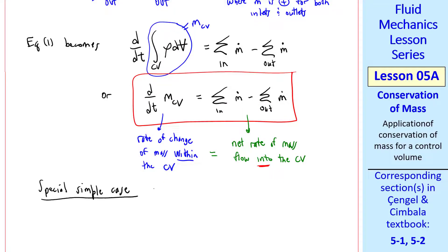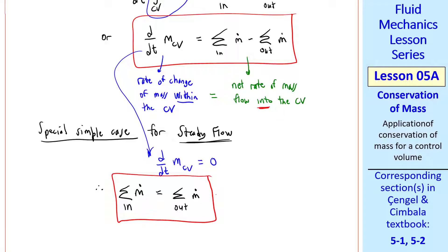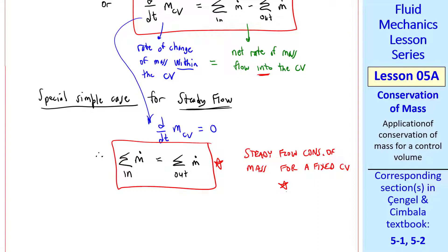Let's look at the special simple case for steady flow, for which the time derivative term goes to zero, and then sigma m dot in must equal sigma m dot out. This is the steady flow conservation of mass equation for a fixed control volume. This is the form we'll use most often in this course.